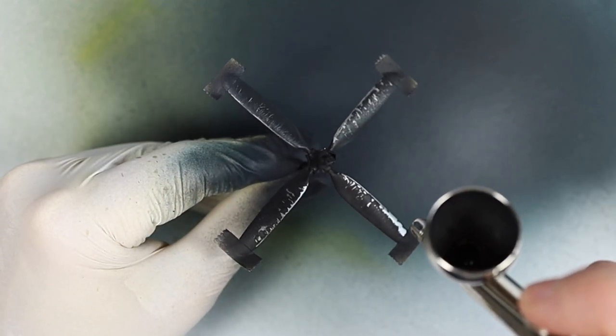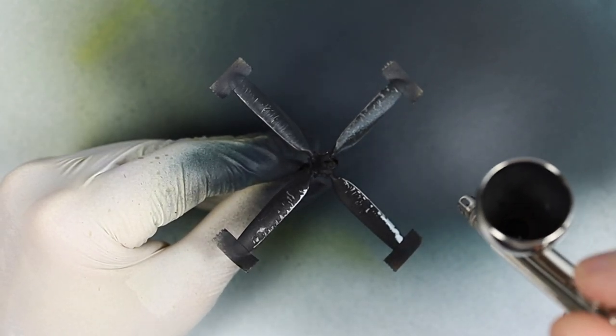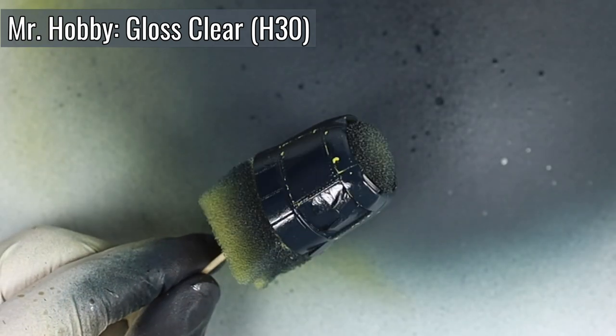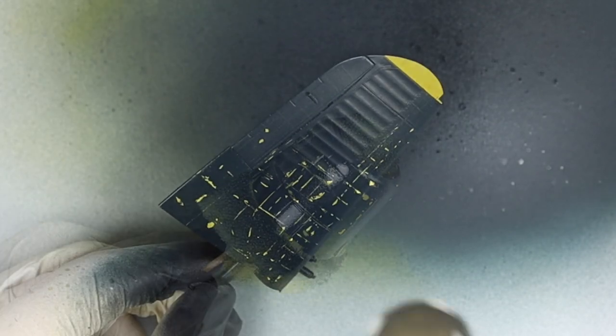The chipping on the propeller was too strong for me, so I sprayed some NATO black again. Now all parts have been sealed with clear varnish to prepare the model for the decals.